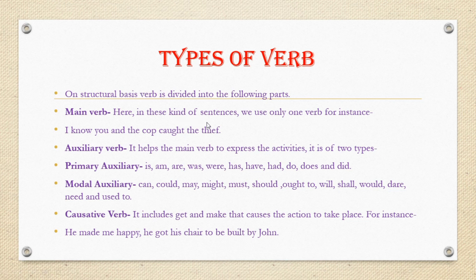The causative verb includes 'get' and 'make,' which cause an action to take place. For example: 'He made me happy' — here 'made' is the causative verb. Another example: 'He got his chair to be built by John' — here 'got' is playing the role of a causative verb.